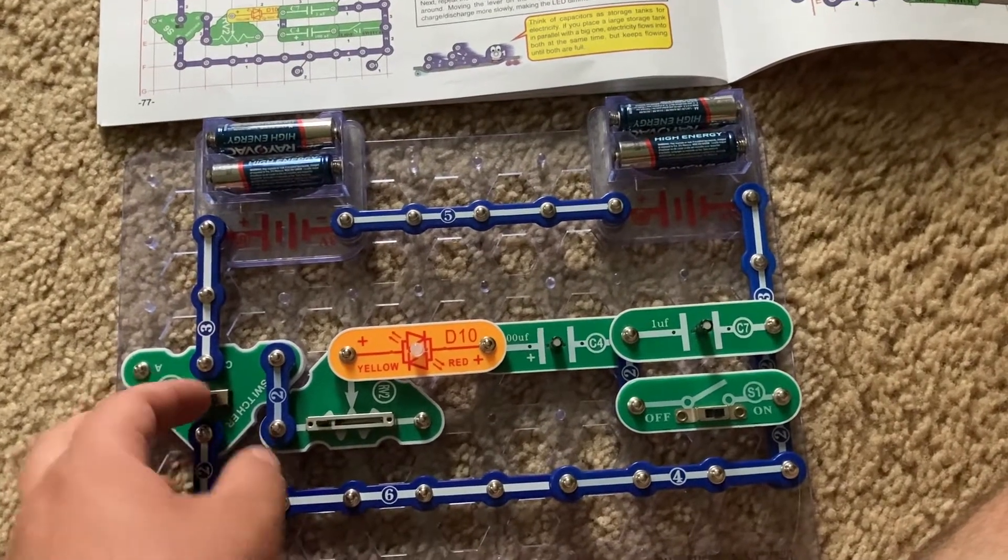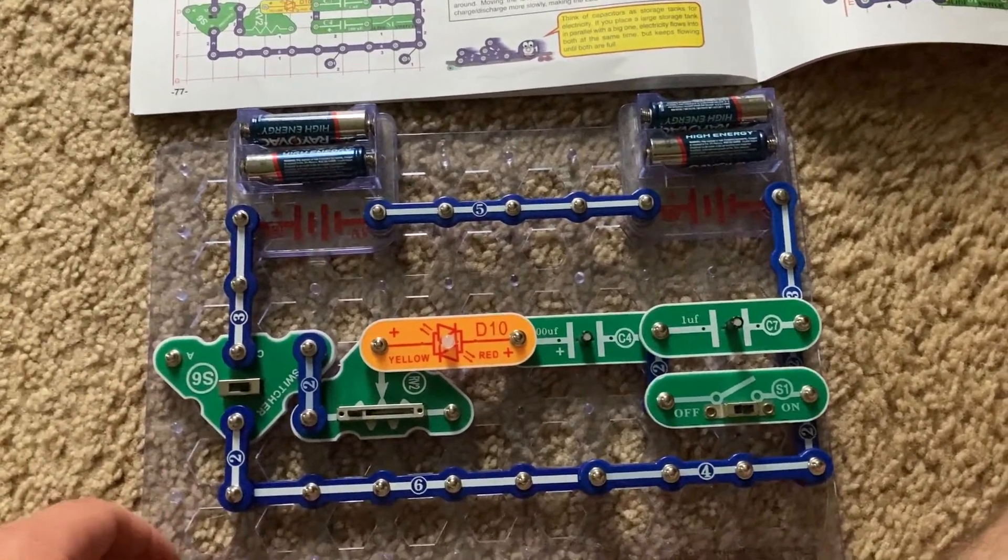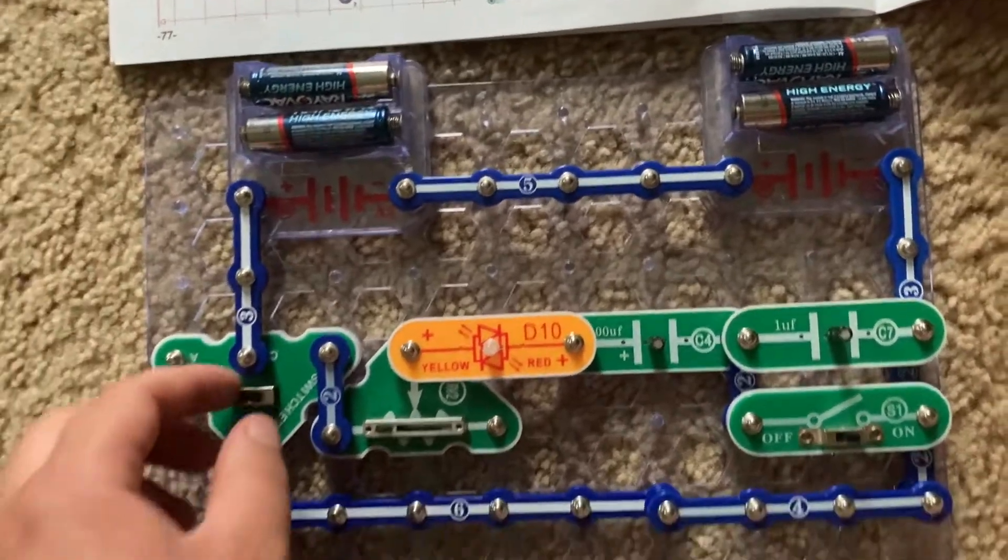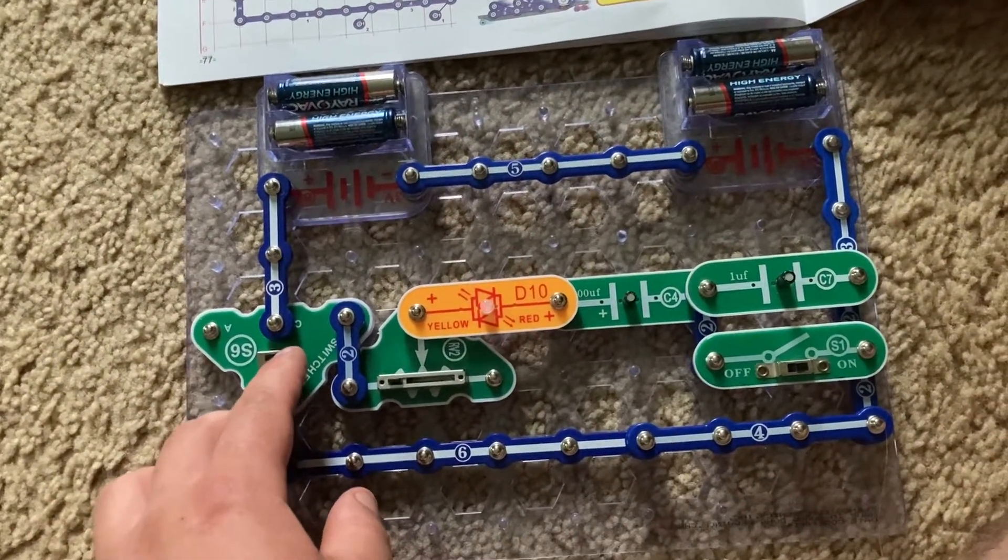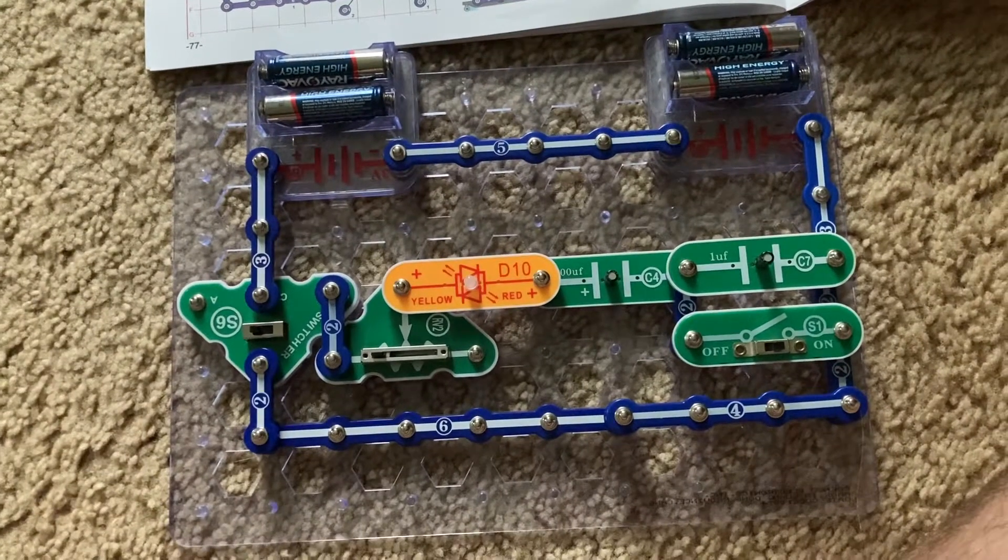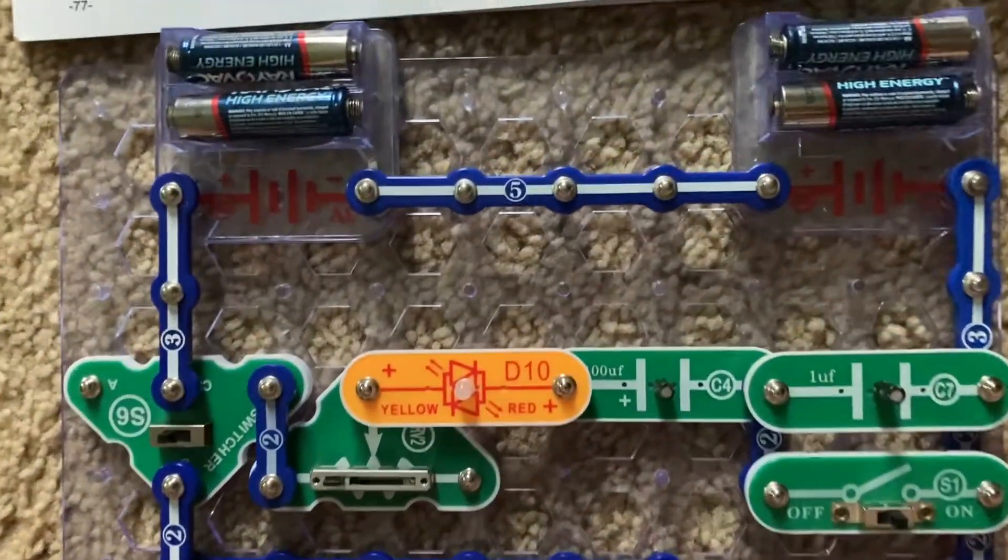The bicolor LED flashes yellow and then when I move the switcher to the other position, the bicolor LED is red and it comes on quickly before going out.